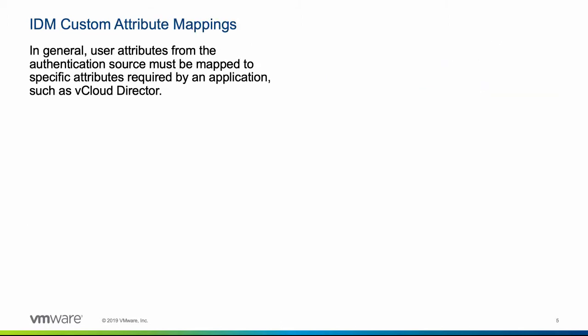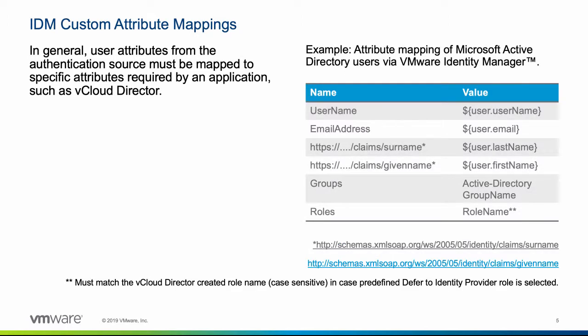During the initial SAML configuration, the user attributes from the authentication source must be mapped to specific attributes. In our case, to integrate a vCloud Director organization with VMware Identity Manager, the organization's Active Directory attributes such as username, email address, groups, and others are mapped to the Identity Manager. Let's have a look at how vCloud Director and Identity Manager need to be configured.